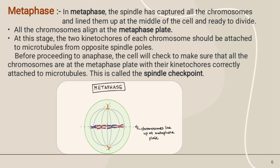At this stage, the two kinetochores of each chromosome should be attached to microtubules from opposite spindle poles. Before proceeding to anaphase, the cell will check to make sure that all the chromosomes are at the metaphase plate with their kinetochores correctly attached to microtubules. This is called the spindle checkpoint.